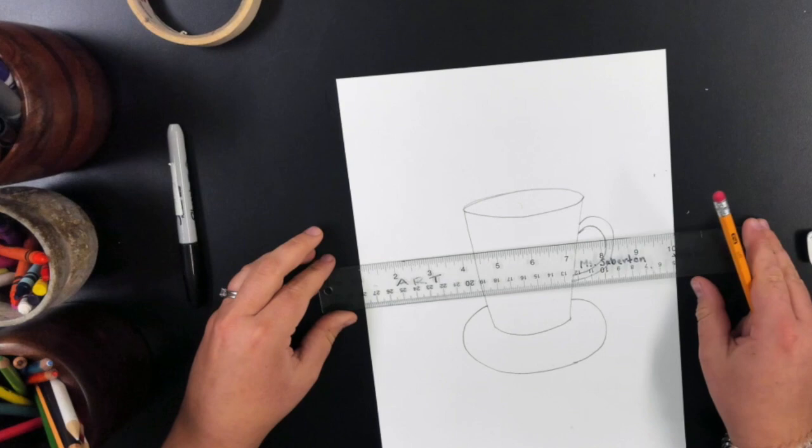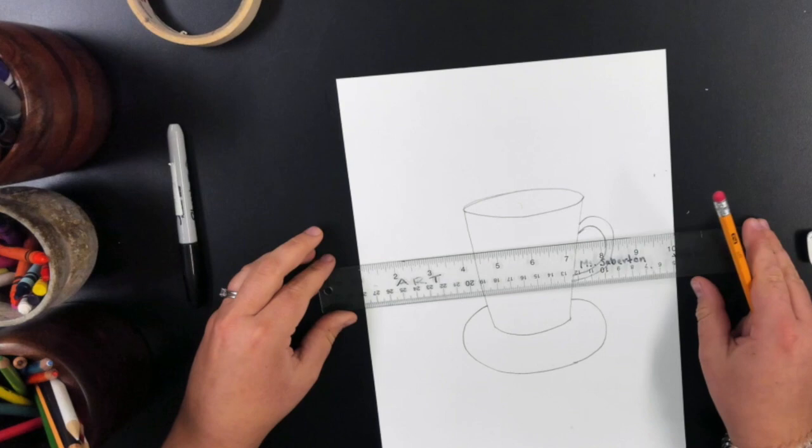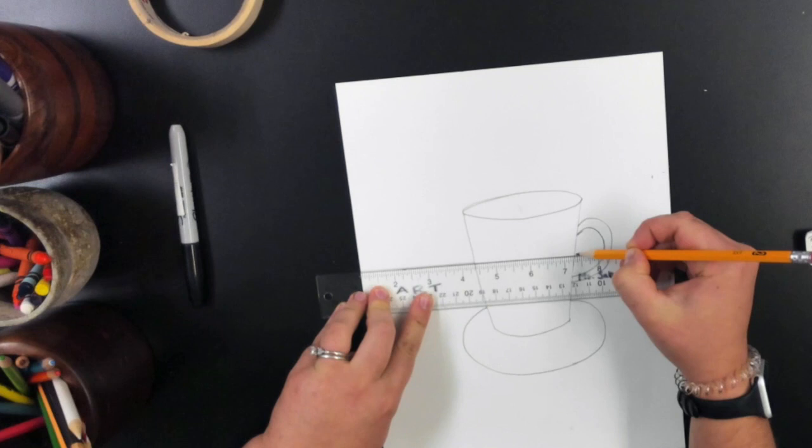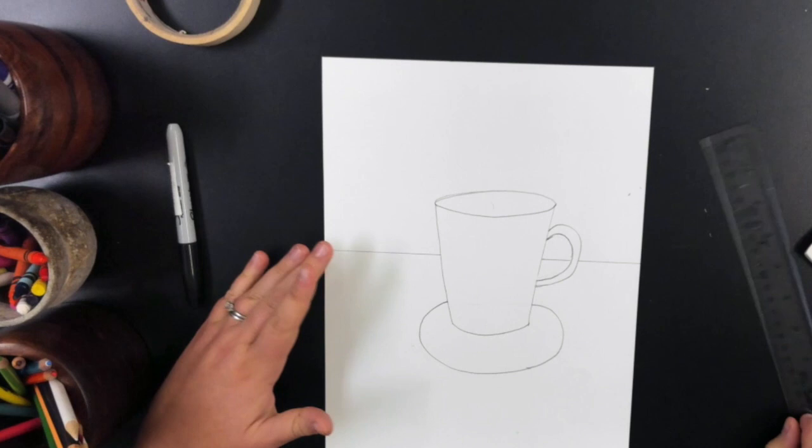Now to put our mug in a place to add space to it, we are going to use a ruler to create our horizon line. That is the line where the sky meets the ground. So we are putting that right behind our mug, making sure we don't have our line go all the way through it.